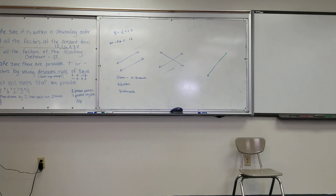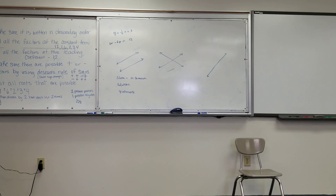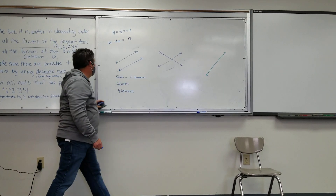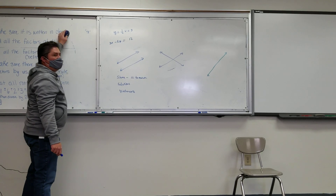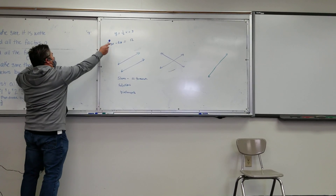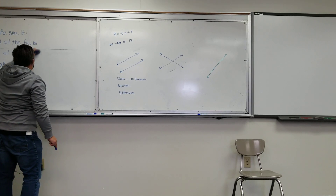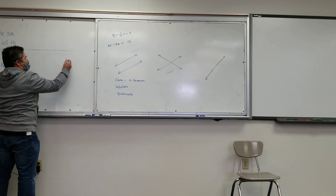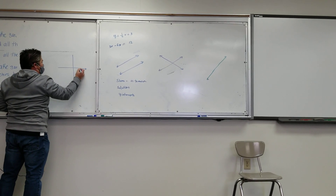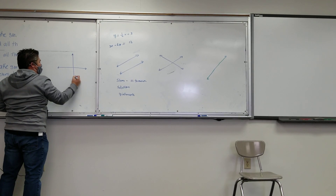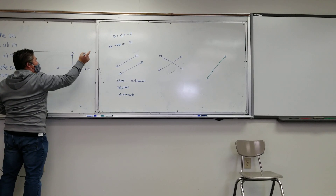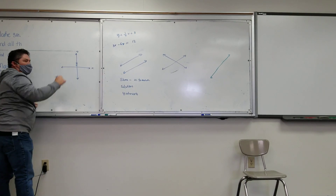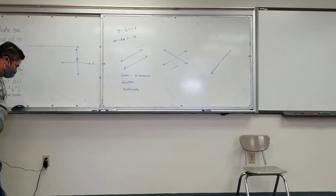How would you graph the top equation? Let's do this one over to the side. How would I graph the top equation? The y-intercept is where we start — that's the number part being added. It's not the fraction part, it's not in front of the x. So you want to start up three on the y-axis.